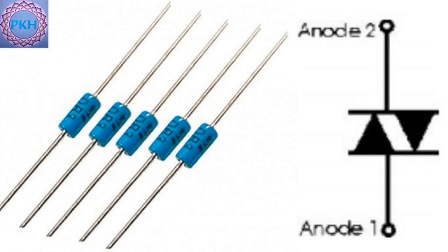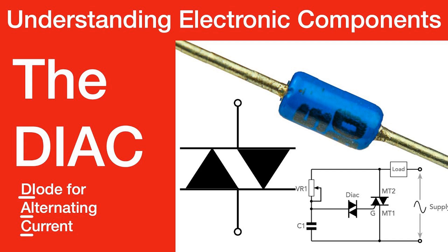The DIAC, diode for alternating current, is widely used in applications involving AC power control, especially in conjunction with TRIACs for smooth switching and triggering. Application 1: TRIAC triggering. One of the most common uses of a DIAC is to trigger a TRIAC. In phase control circuits such as dimmers or motor speed controllers,